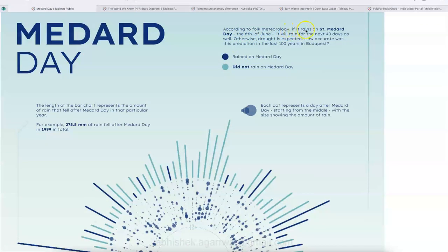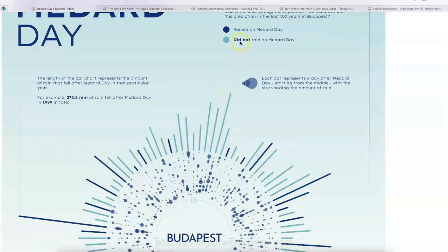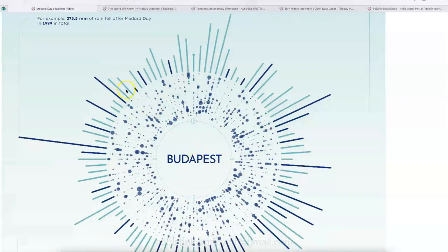According to Folk Meteorology, if it rains on St. Medard Day, the 8th of June, it will rain for next 40 days as well. Otherwise, drought is expected. So based on this Folk Meteorology, the visualization was created. And they are saying with the help of this data, how accurate was this prediction in last 100 years in Budapest.